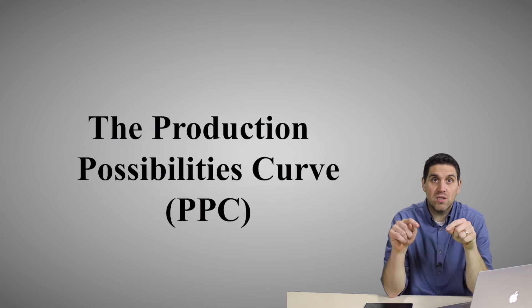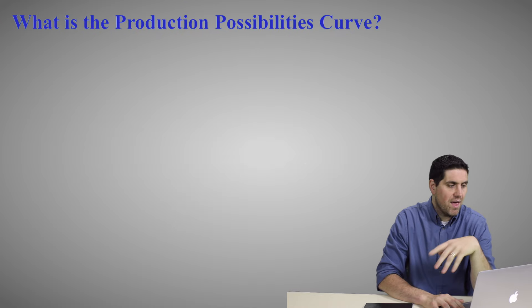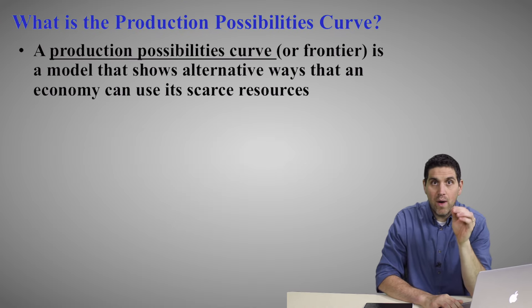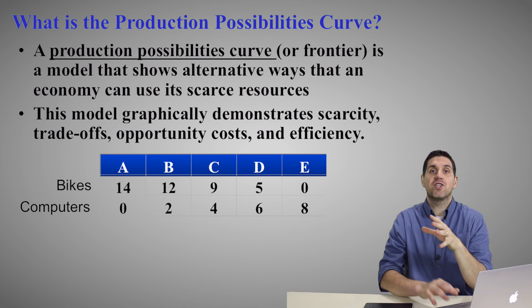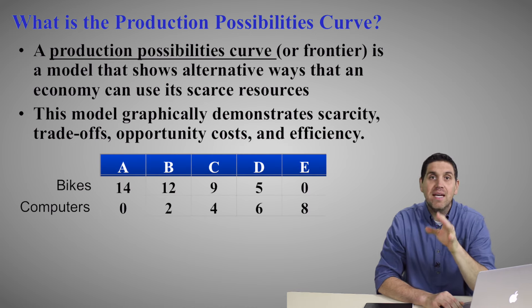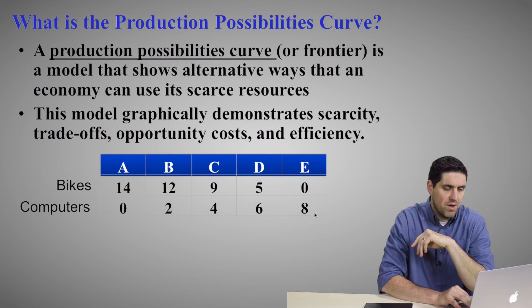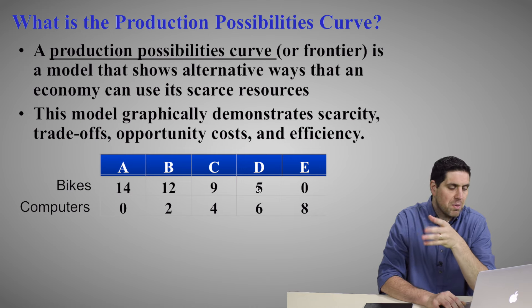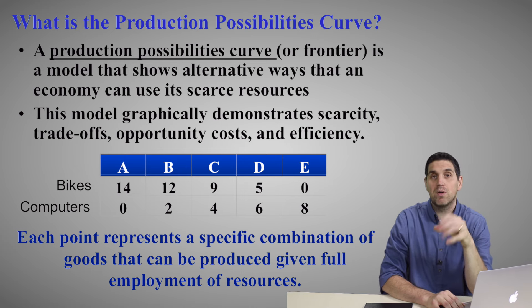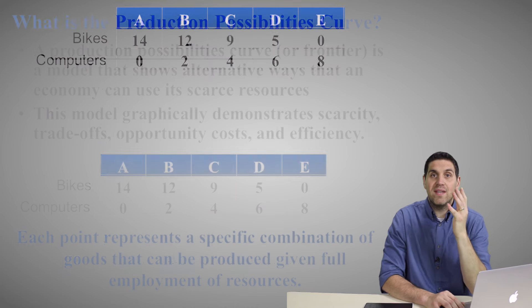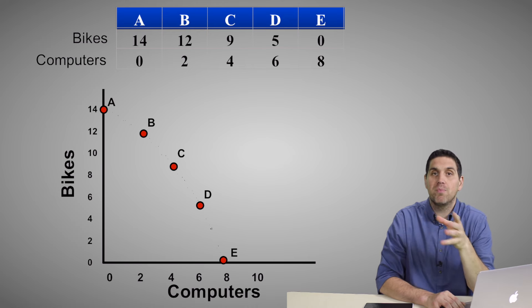Now it's time for the key graph in this course: something called the Production Possibilities Curve. Your teacher might call it the Production Possibilities Frontier — it's all the same thing. It's basically a model that shows the alternative ways we can use our scarce resources. It's going to show trade-offs, scarcity, opportunity cost, and efficiency all on one graph. It starts with a chart showing bikes and computers at different combinations — A, B, C, D — all different combinations of the two goods. If you actually plot this, you come up with a Production Possibilities Curve.